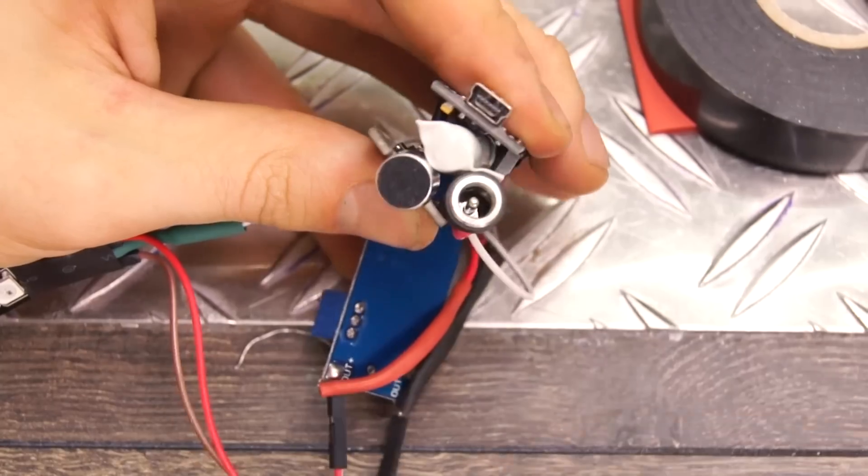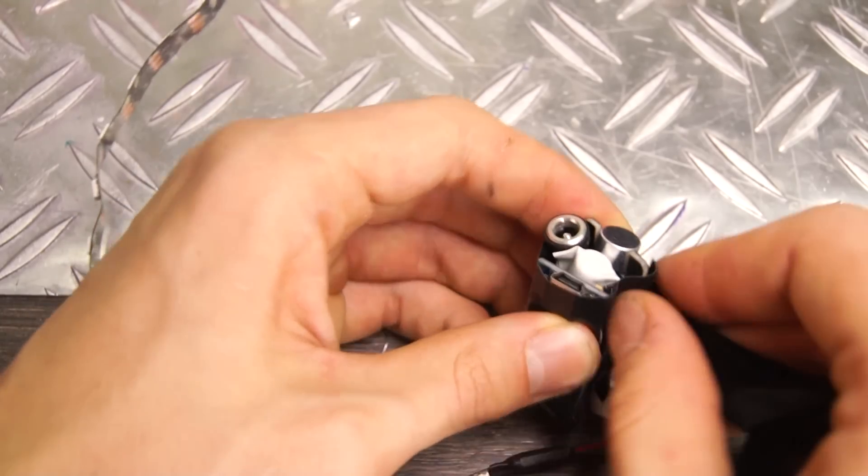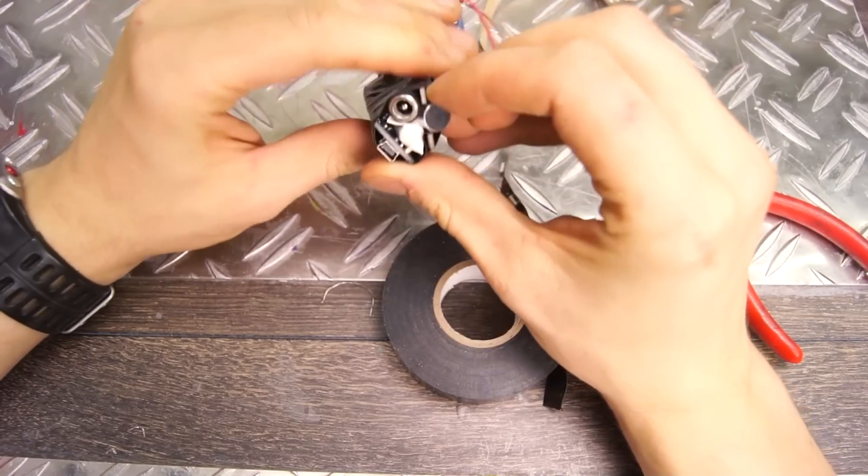To make everything fit inside our PVC pipe, we need to wrap it together and make sure that we can access the Arduino, the power and that the sound detector has a free path to the surroundings.